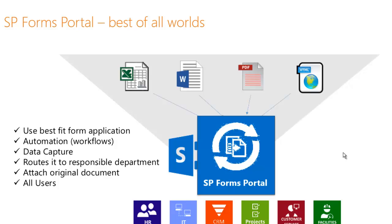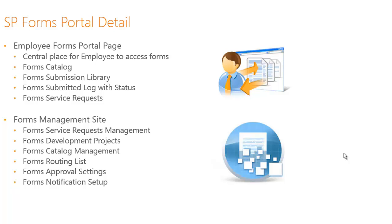First, there's an employee forms portal page — a central point where employees can access different forms through a forms catalog. They can search and browse by category. Once they find the form they need, they can download it or fill it out right there. Once filled out, they can upload and submit it directly to the submission library, and it will automatically start processing. They can also see the status of their submitted forms and a history through a submitted log.